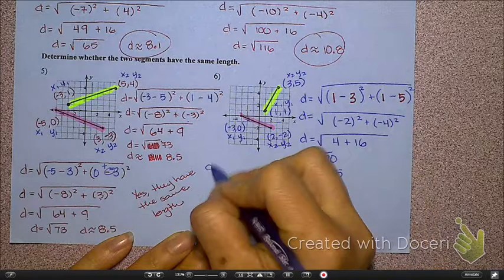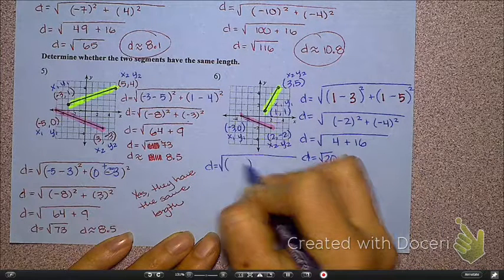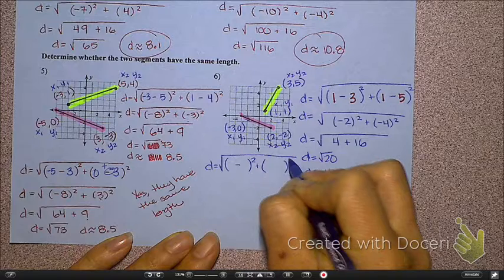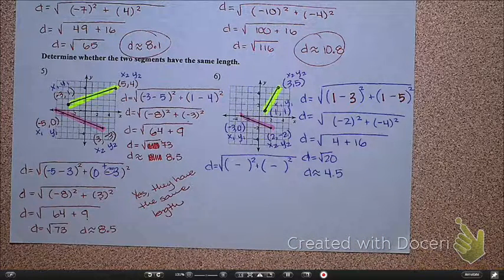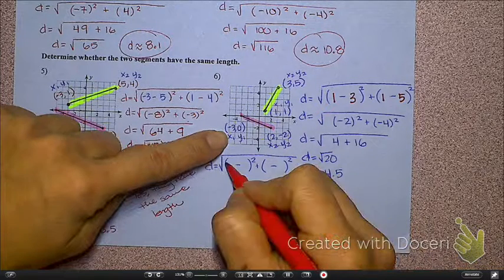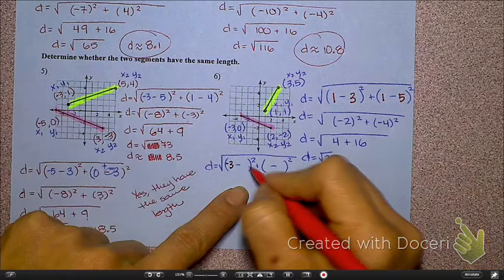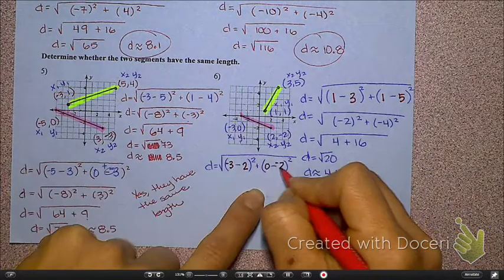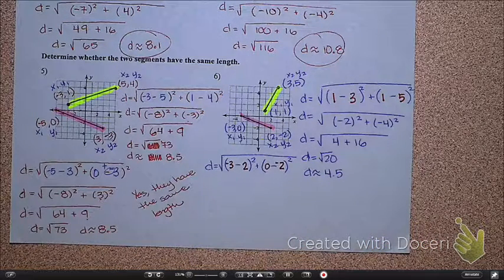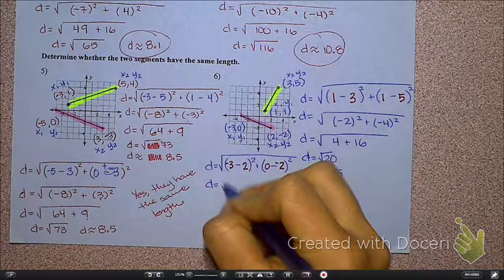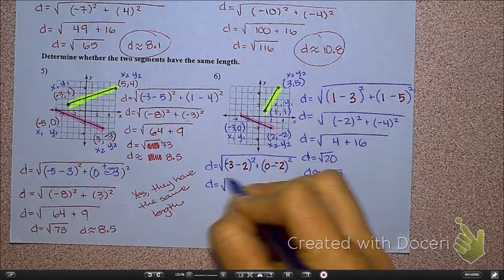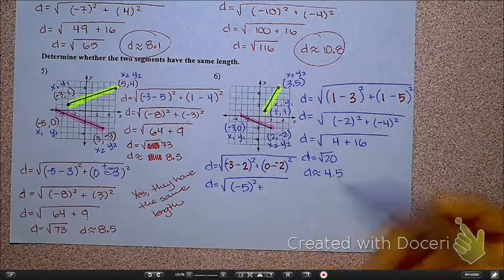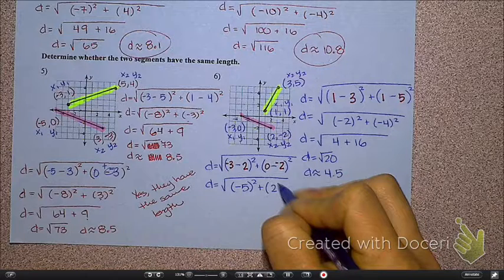So, I'm going to go ahead and set up my formula, my outline here. And now I'm going to put in the numbers. I'm going to put in the x's first, negative 3 and 2. And then I'll put in the y's, 0 and negative 2. So, here's what I end up getting for this one. Inside these parentheses, I get negative 5. This makes 0 plus 2, so that gives me positive 2.